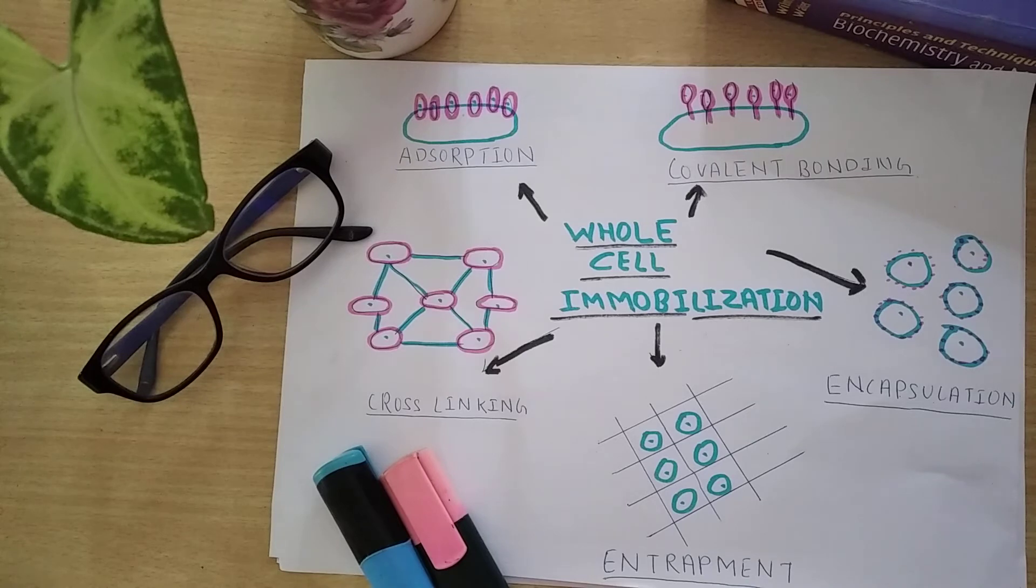can be adjusted with the concentration of the polymer used. The greatest disadvantage of this method is that there is a possibility of leakage of low molecular weight enzymes from the matrix. There are some examples of commonly used matrices